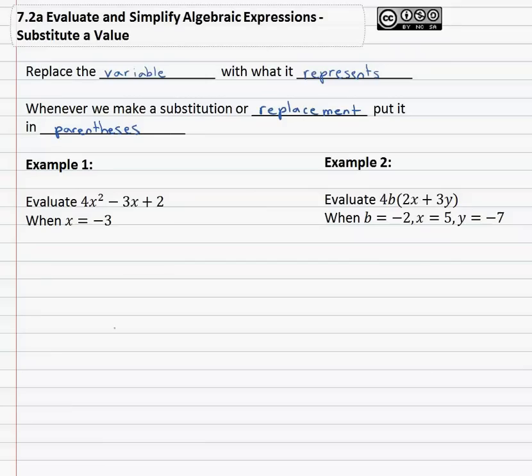So in this first example, we're asked to evaluate 4x squared minus 3x plus 2 when x equals negative 3. We know x is equal to negative 3, x represents the number negative 3. So wherever we see an x in the expression, we're going to replace those x's in parentheses with a negative 3.